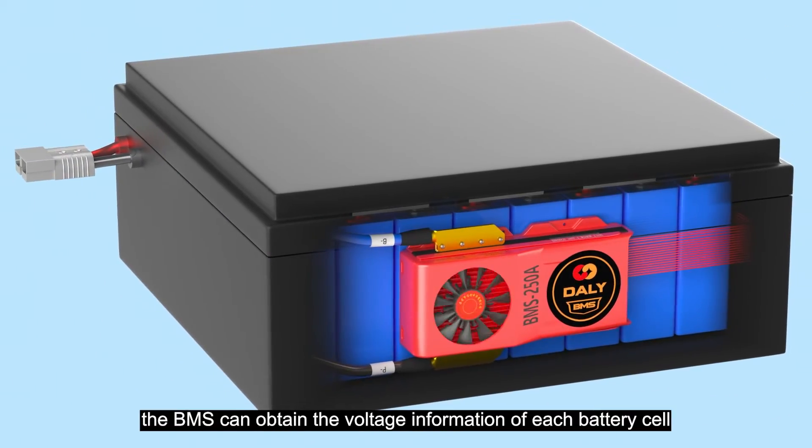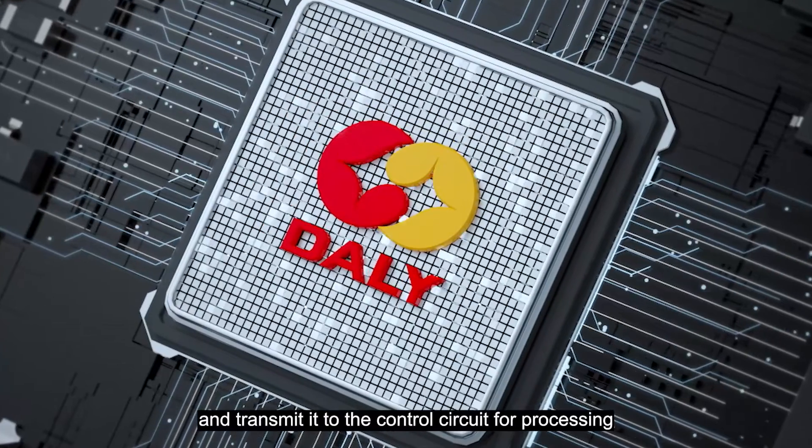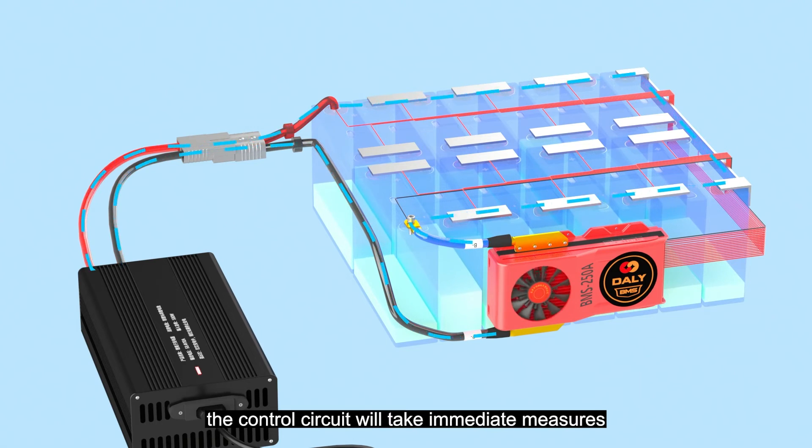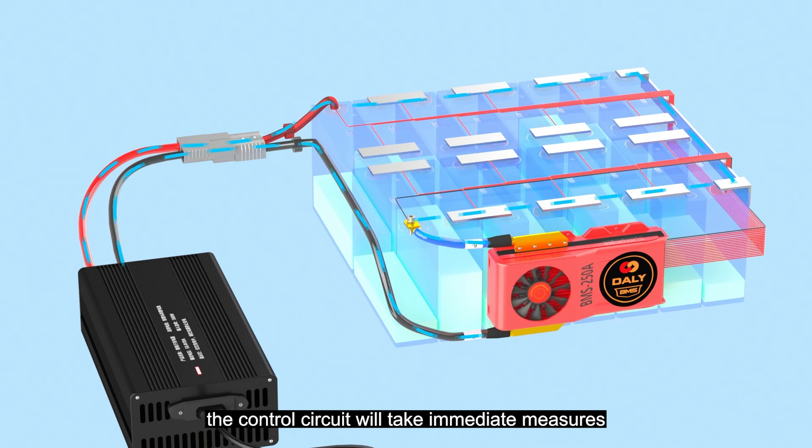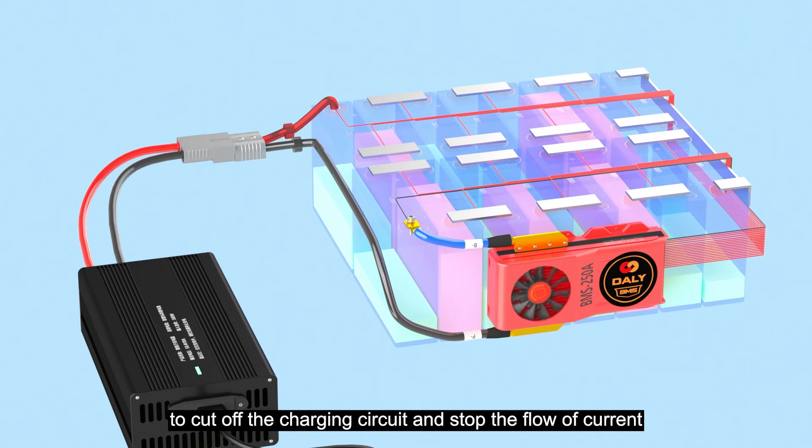the BMS can obtain the voltage information of each battery cell and transmit it to the control circuit for processing. When the BMS detects that the voltage of any string of battery cells is approaching or reaching an overcharged state, the control circuit will take immediate measures to cut off the charging circuit and stop the flow of current. This can prevent the battery from continuing to charge and avoid the risk of overcharging.